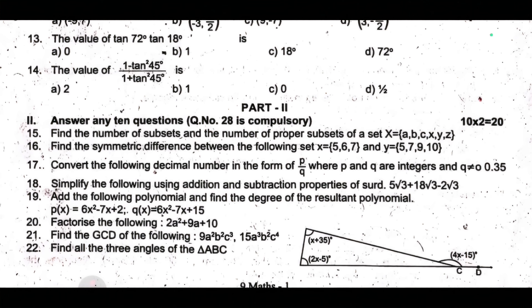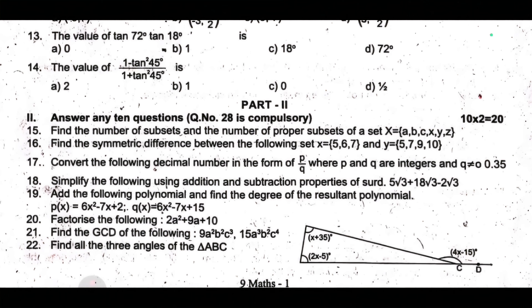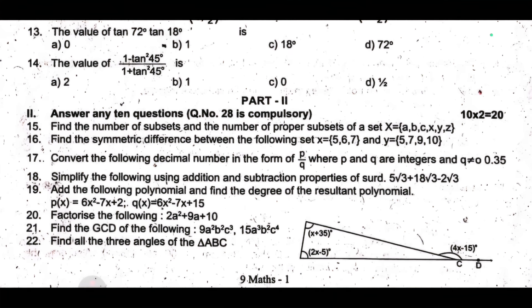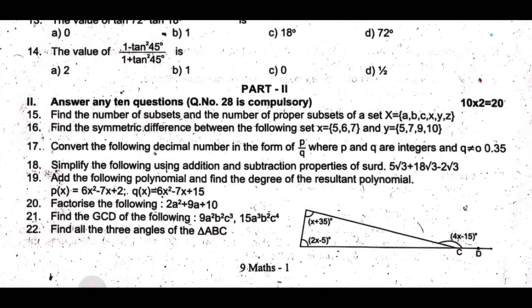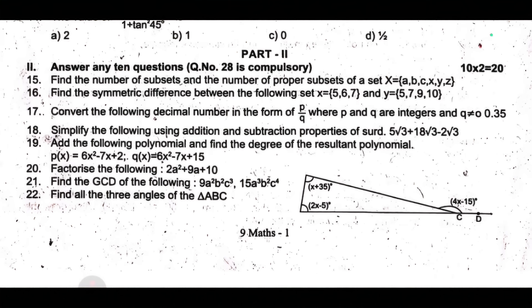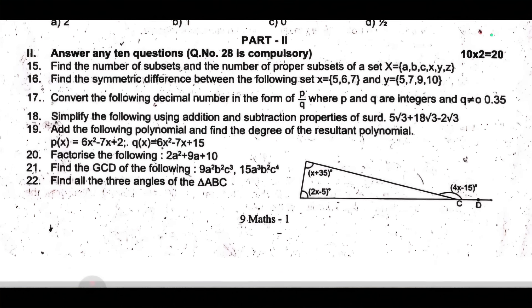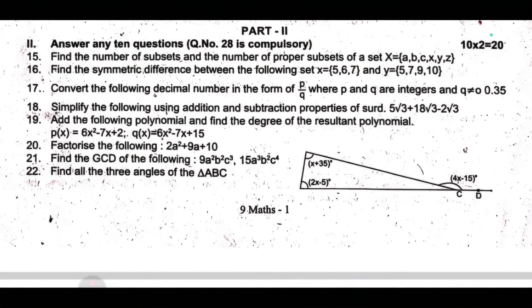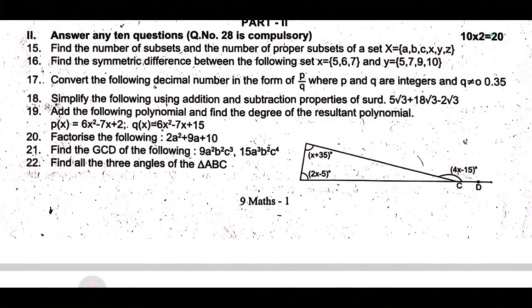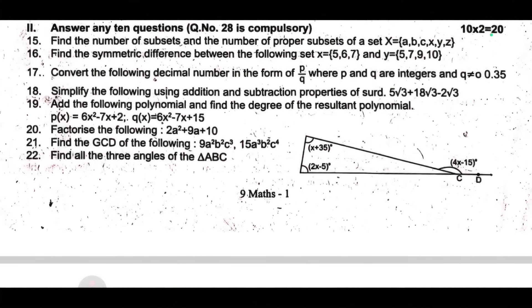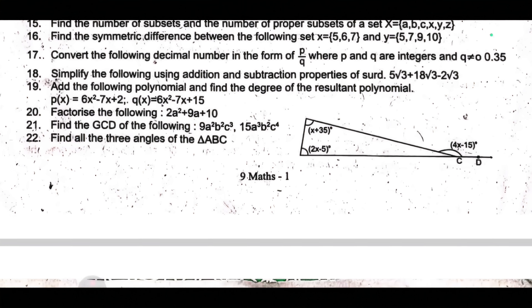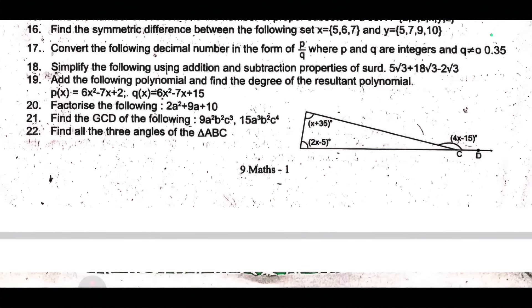Seventeenth one, convert the following decimal number in the form of p by q where p and q are integers and q not equal to 0.35. Eighteenth one, simplify the following using addition and subtraction properties of surd: 5√3 plus 18√3 minus 2√3. Nineteenth one, add the following polynomials and find the degree of the resultant polynomial: p of x equal to 6x² minus 7x plus 2, q of x equal to 6x² minus 7x plus 15.